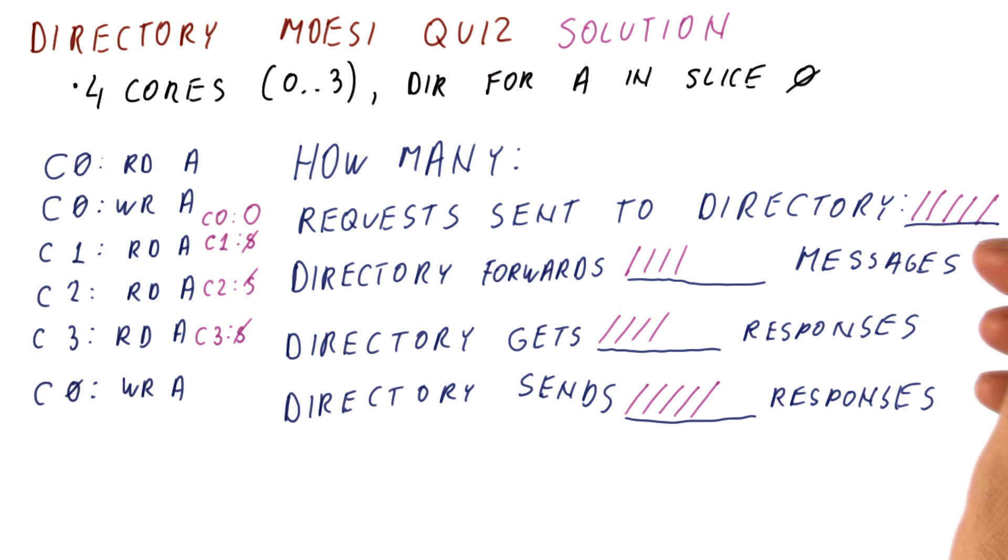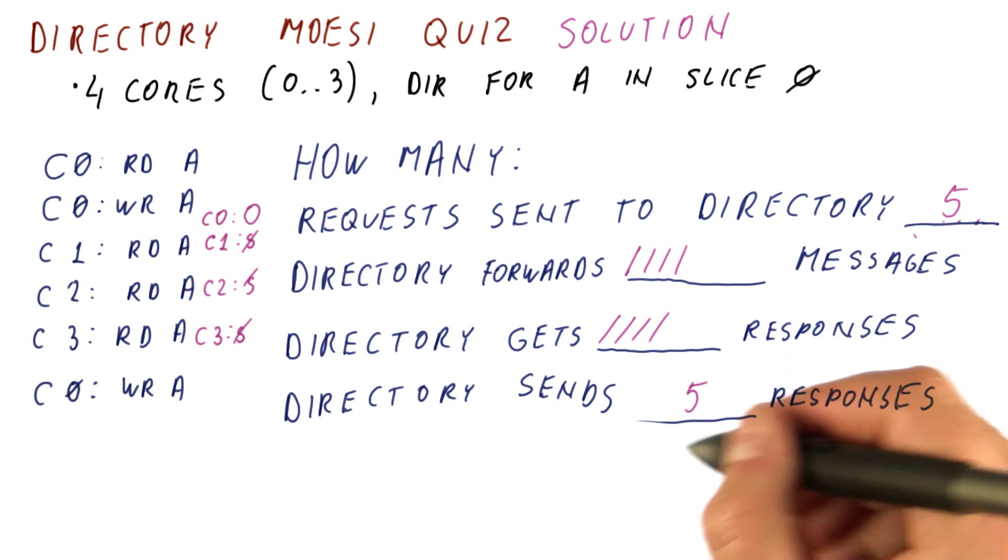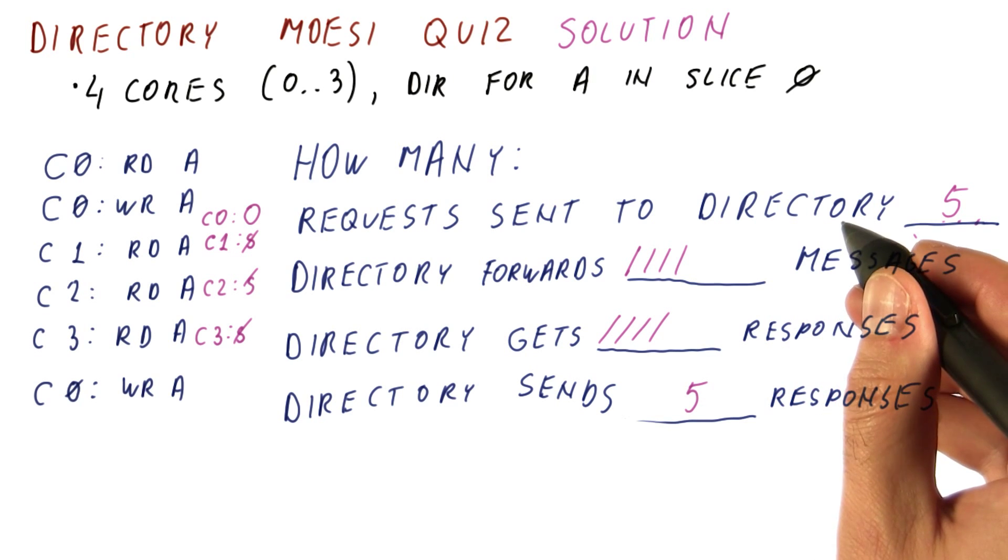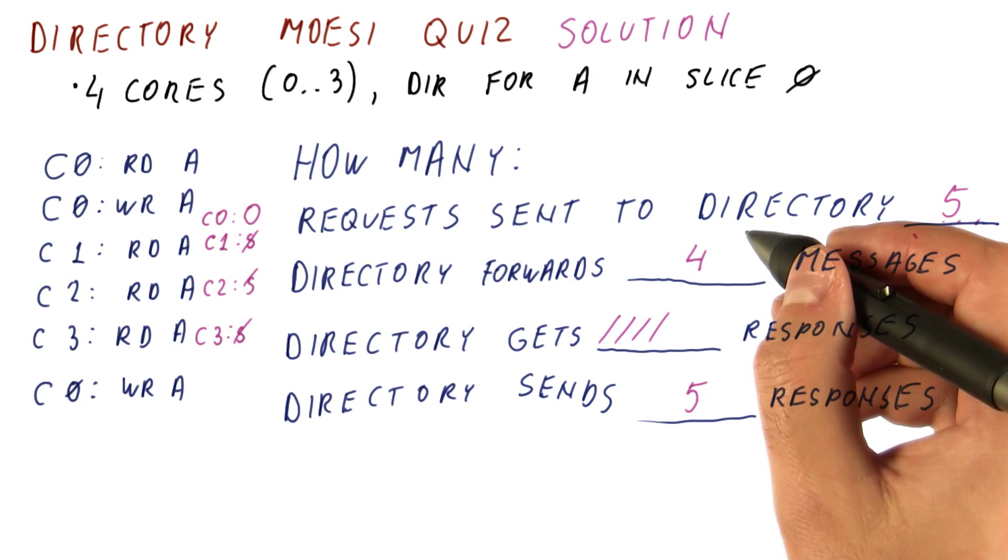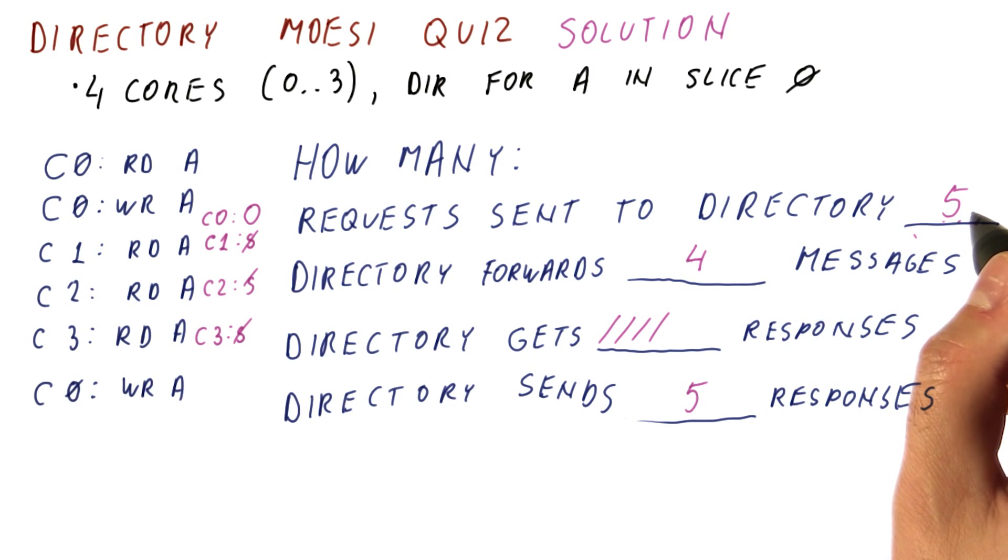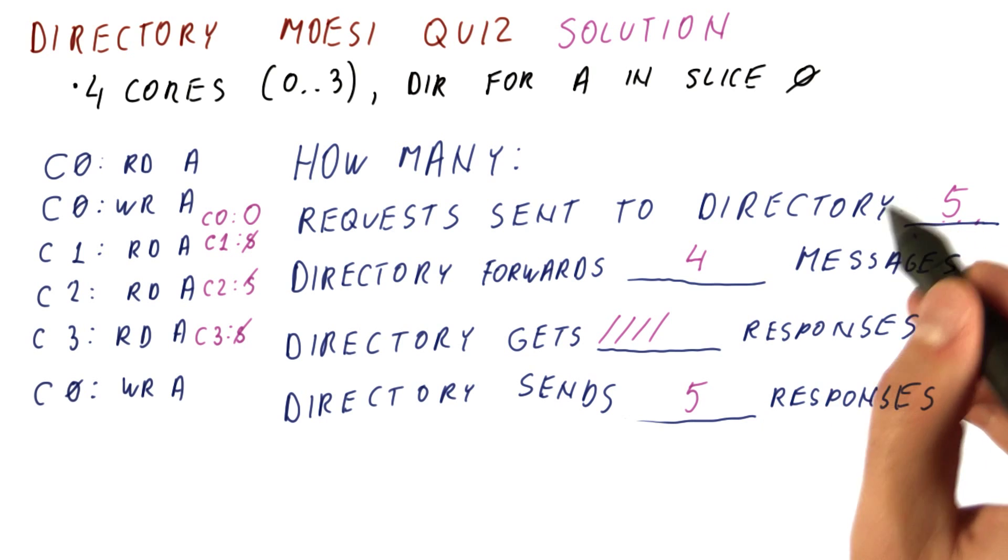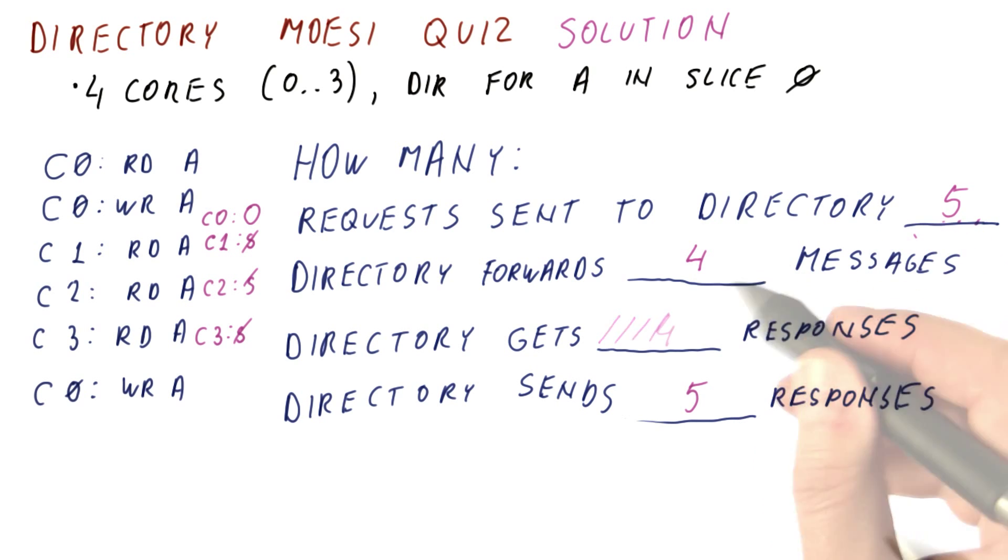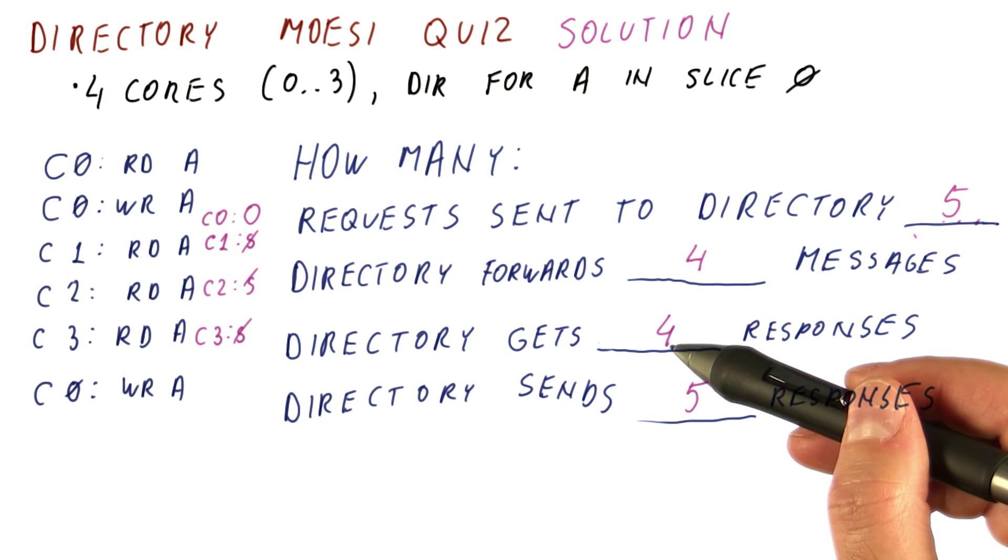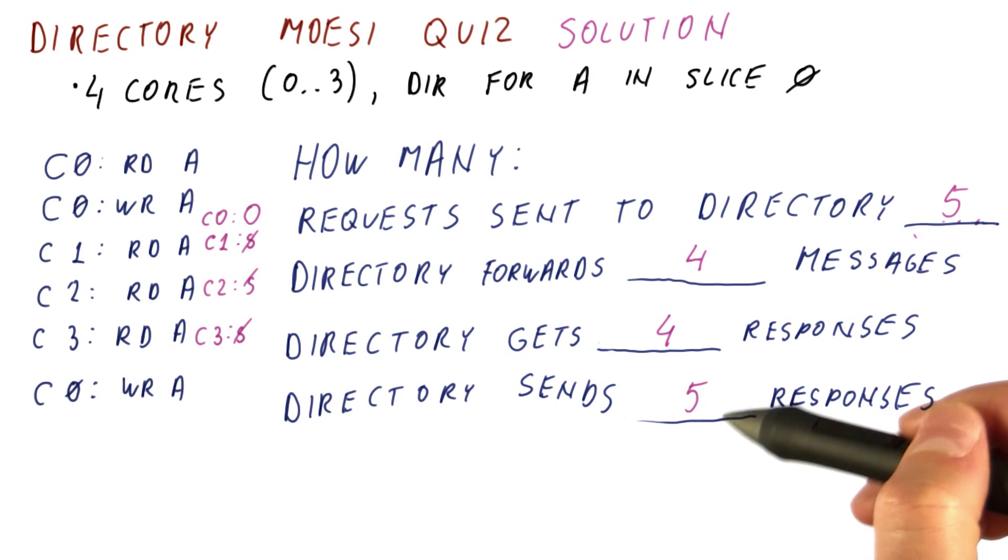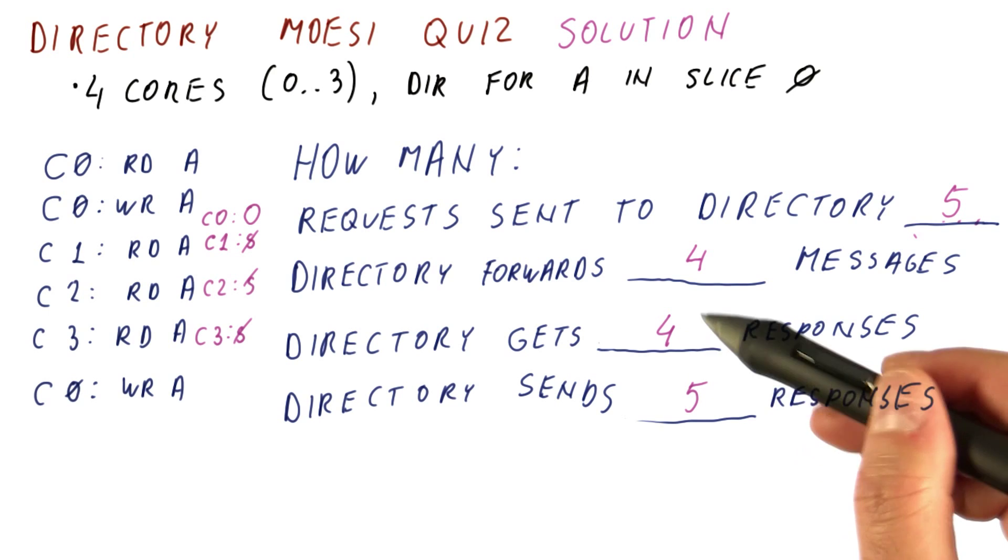So overall, we had five requests sent to the directory, and that also means that there are five responses from the directory because every request will have a response. The directory has forwarded four messages. Note that this is not like four out of five got messages forwarding. In fact, one of these was for one message and the other three were for the second message. And then we got four responses to these messages. Again, every message needs to get the response because the directory cannot acknowledge and allow a core to, for example, write until all of the sharers have indicated that they have invalidated their state in the cache.